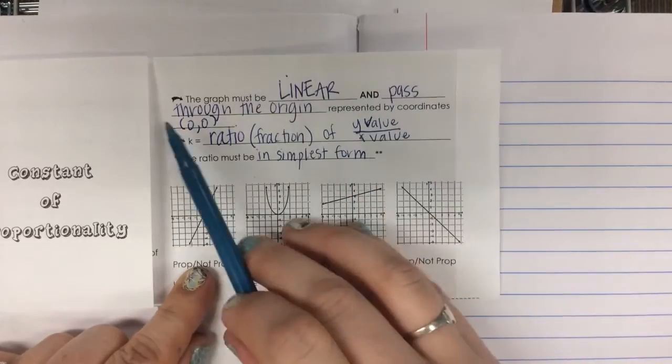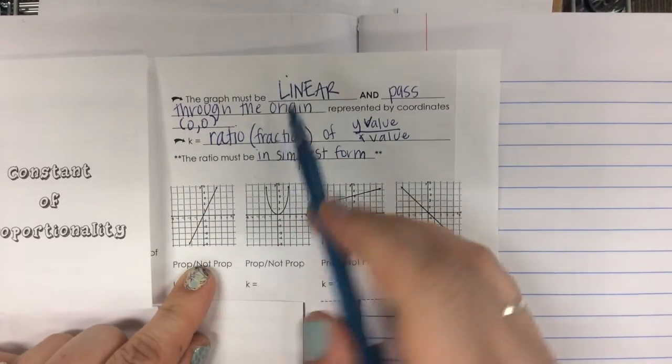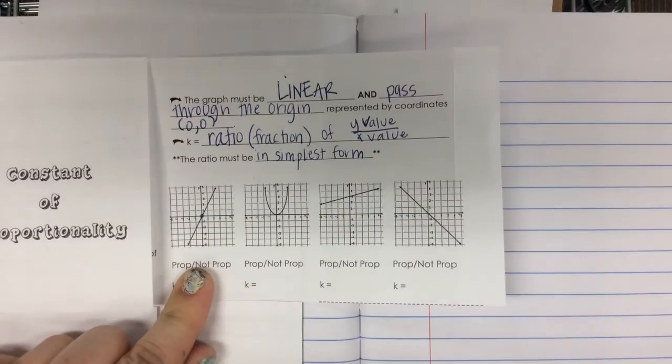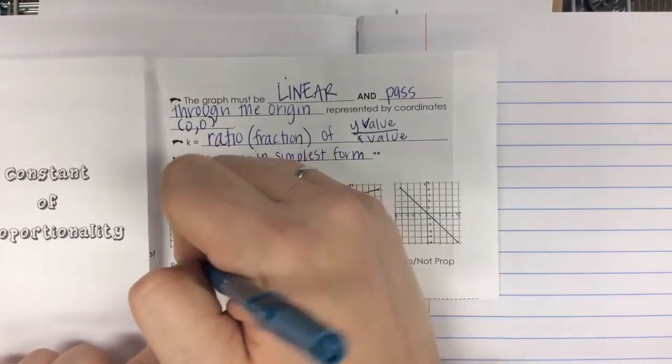And does it pass through the origin? Here's the middle. Does it pass through? Yes. So it's proportional.